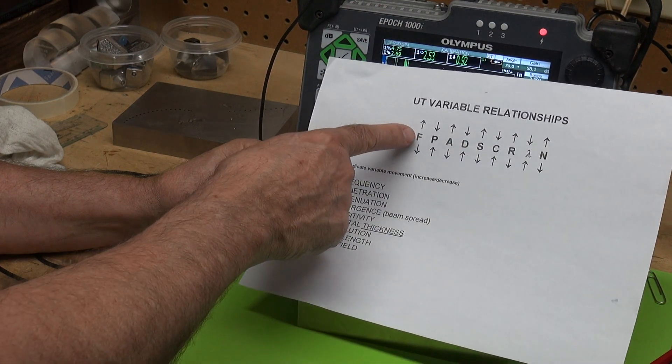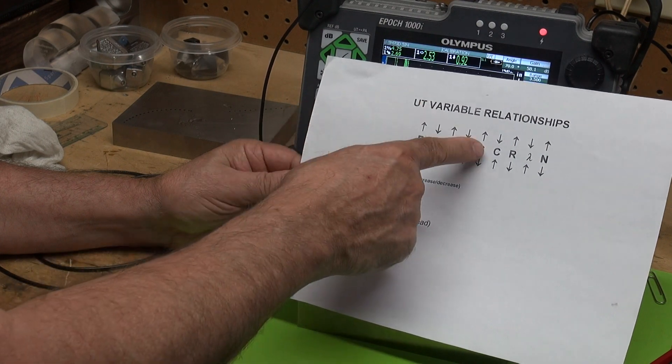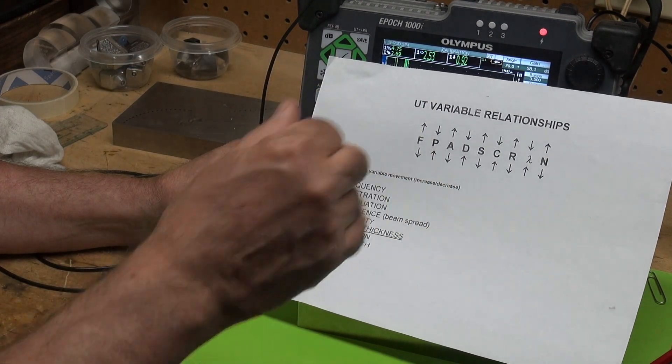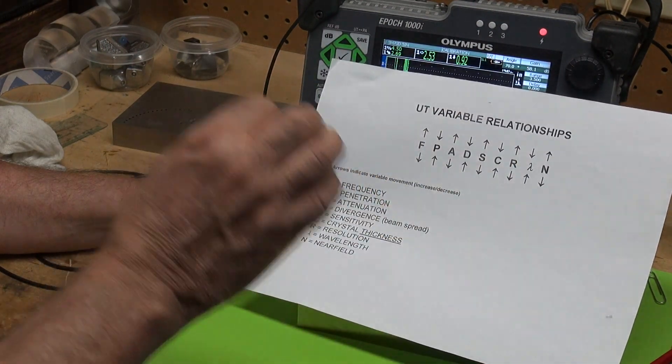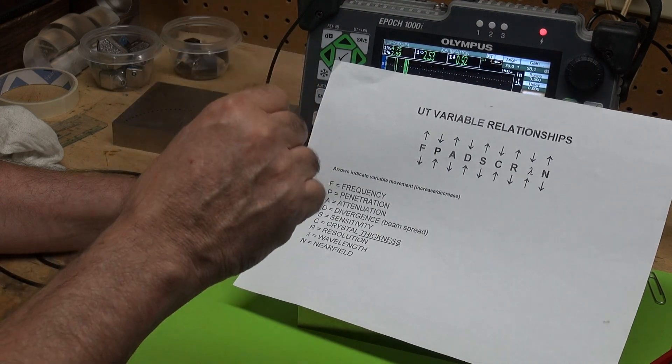So frequency, as the frequency of your transducer goes up, your sensitivity goes up, meaning that you'll find smaller indications, and your resolution goes up, meaning that you can detect small indications that are close together.